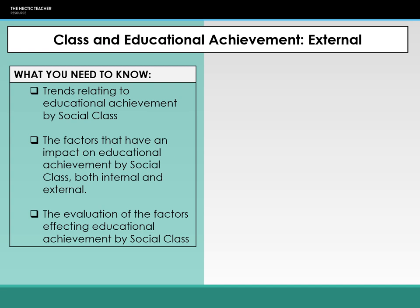In this lecture we're going to be looking at class and educational achievement, and specifically looking at the external factors which relate to education and class and how they can contribute to the trends in education and class. We've already covered the trends previously and pointed out that middle class students do tend to do better than working class students, and this is where we're going to look at why that is.